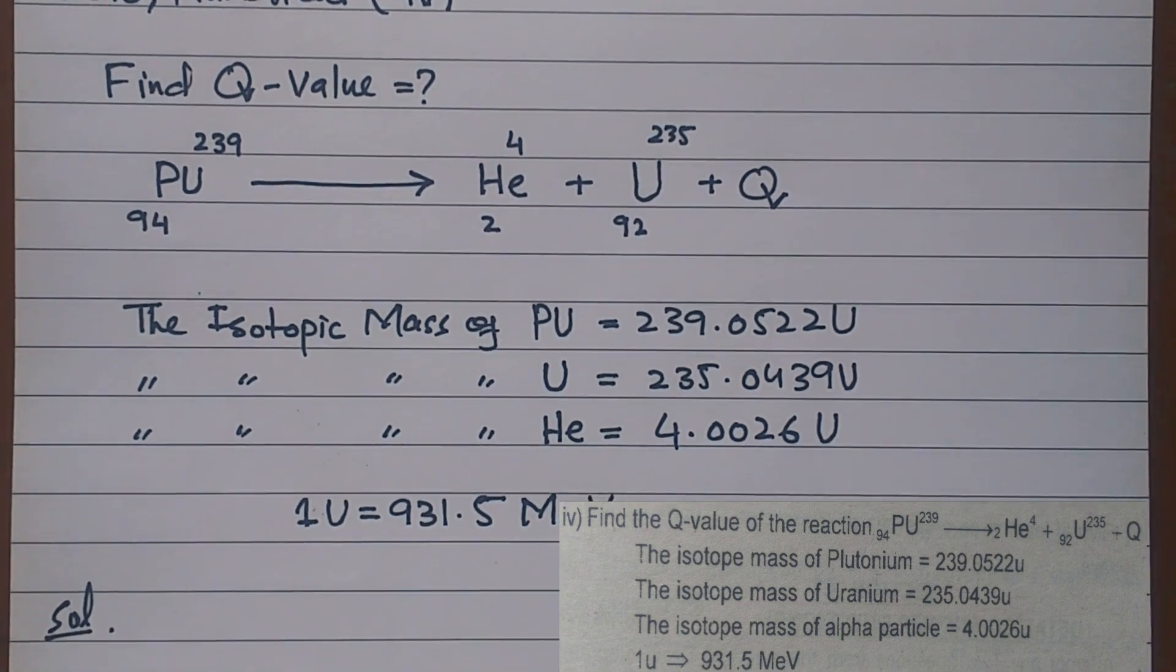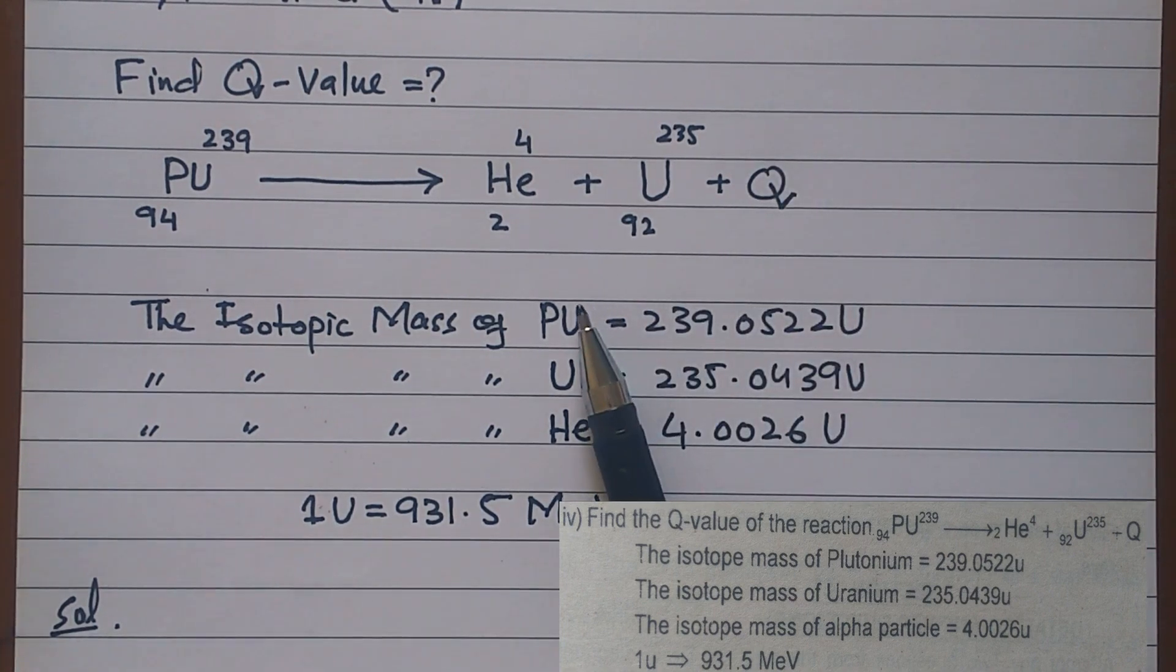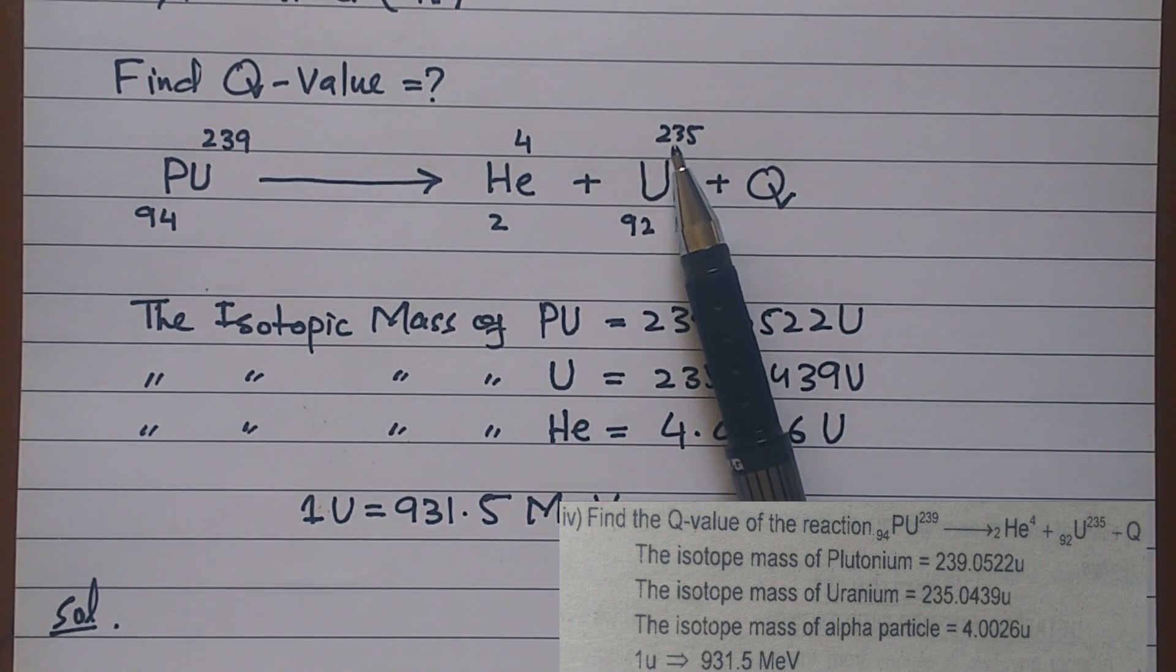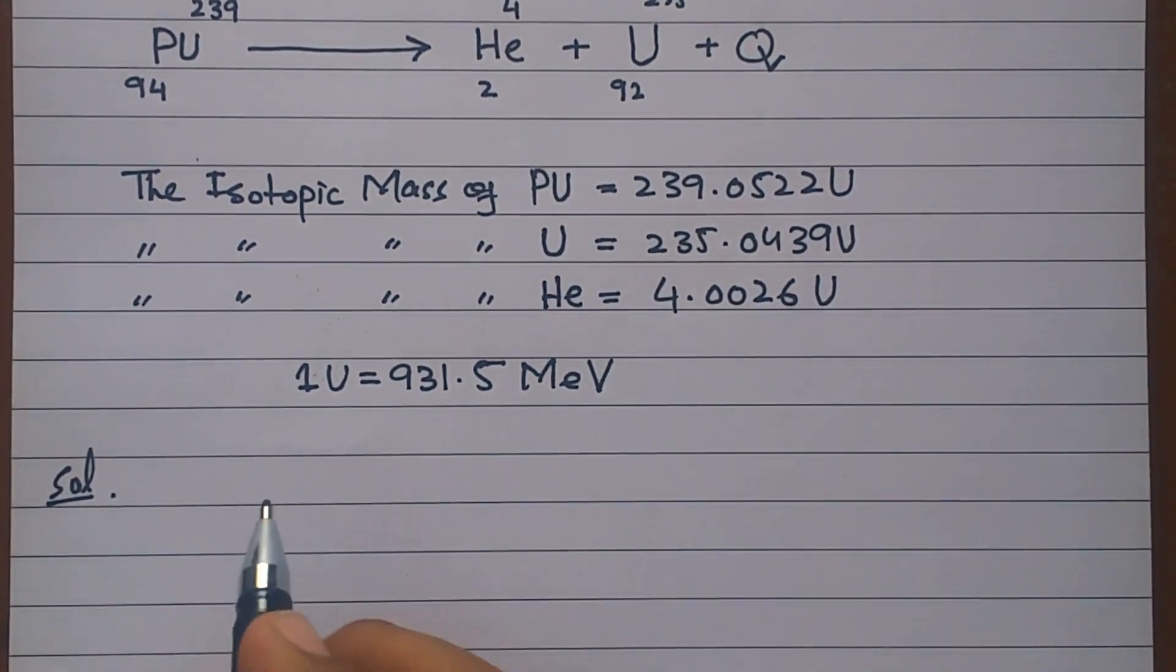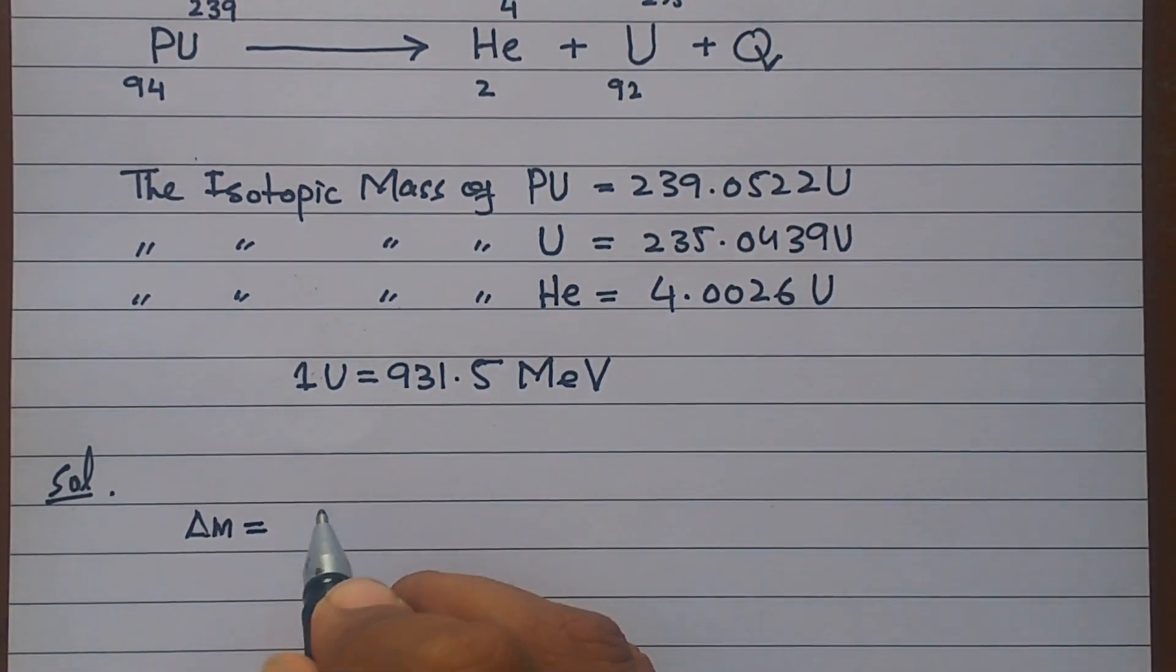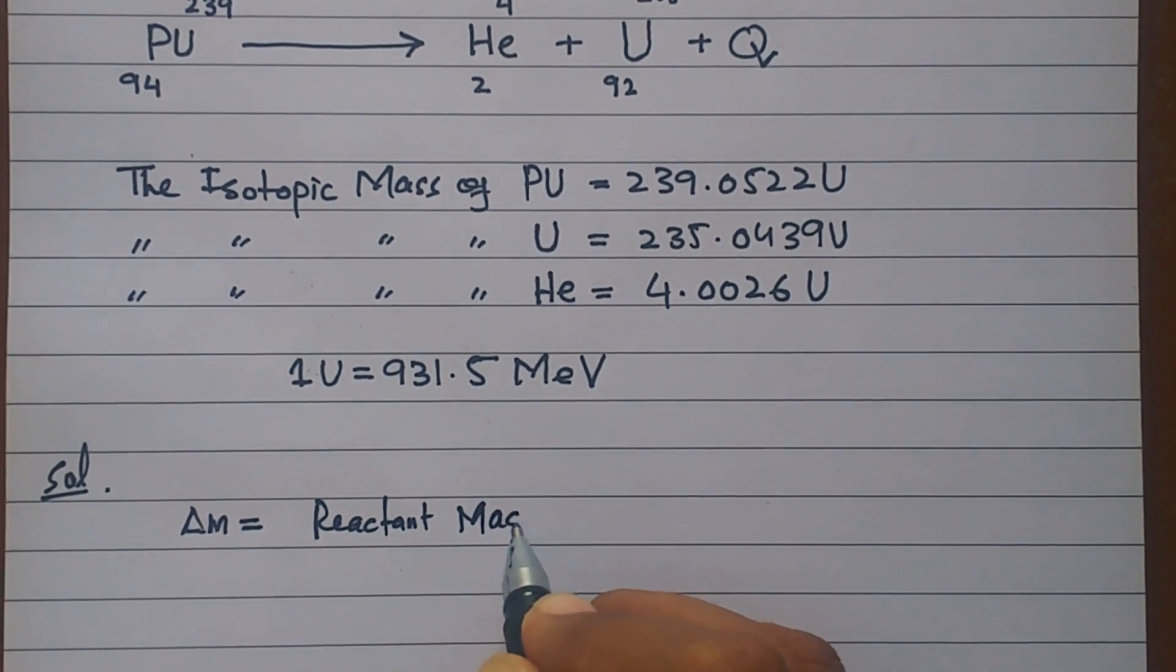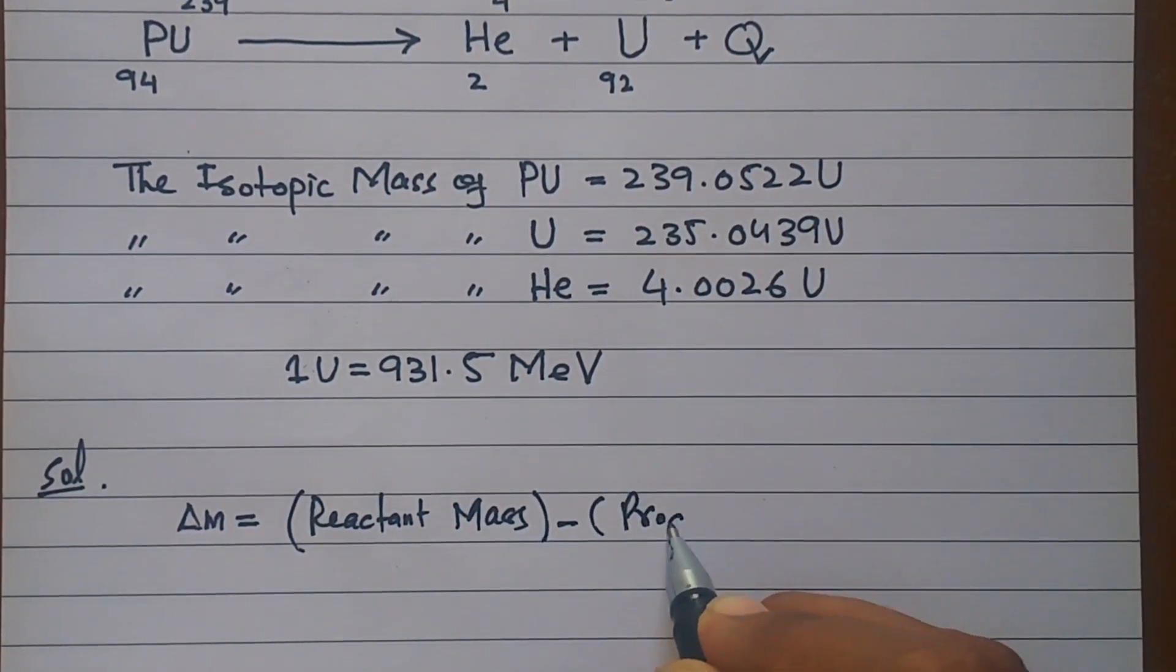If you have seen the theory, when the equation is given, you will have the mass defect. You will have the reactant minus the product mass. The mass defect is the reactant mass minus the product mass.